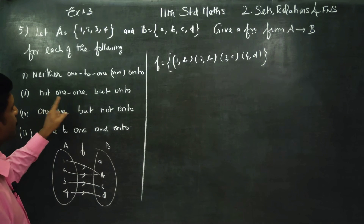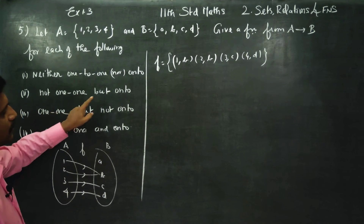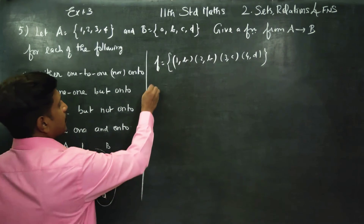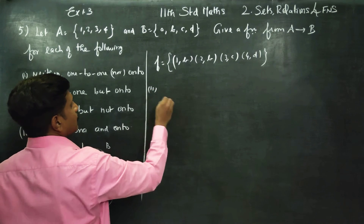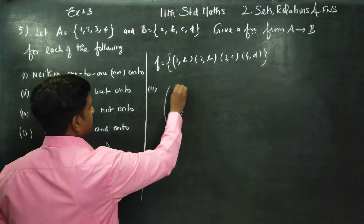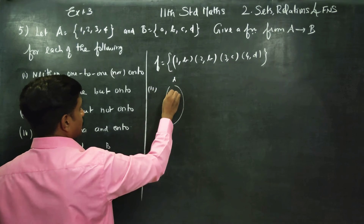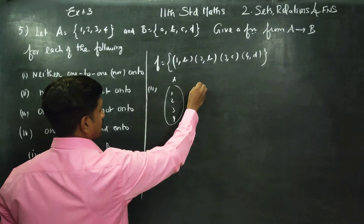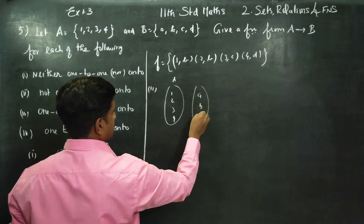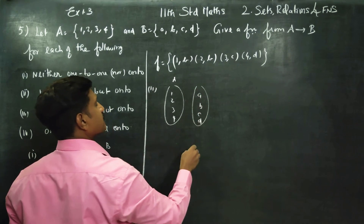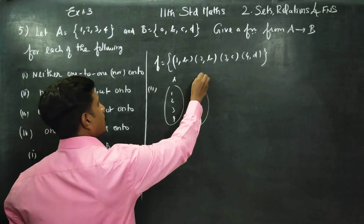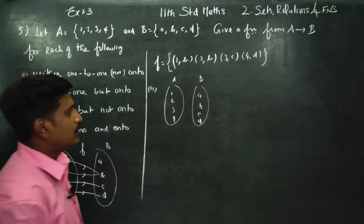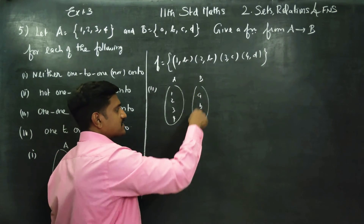Number two: not one-one but onto. Not one-one but onto. For example, we have a set with elements 1, 2, 3, 4 and another set with elements a, b, c, d. Now if you say onto, it's like a balance.